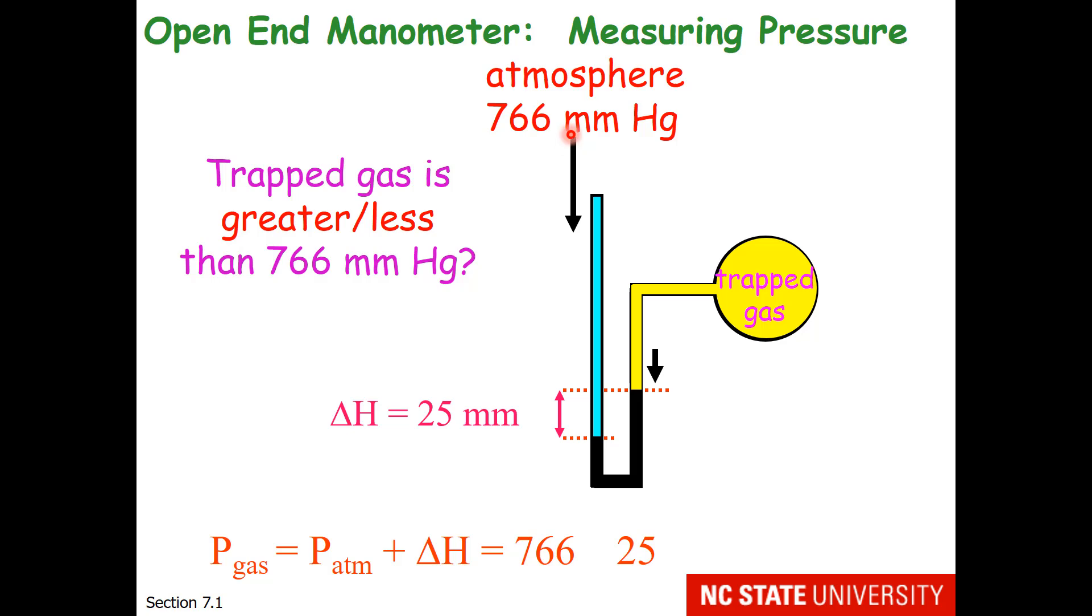Well, it appears that the atmosphere is pushing down harder than the trapped gas. So the trapped gas must be at a lower pressure. So we should take 766 and subtract 25, and we'll wind up with 741 mm of mercury.